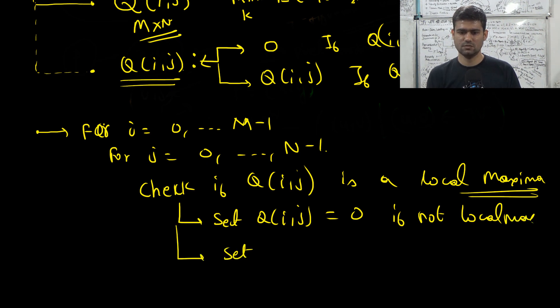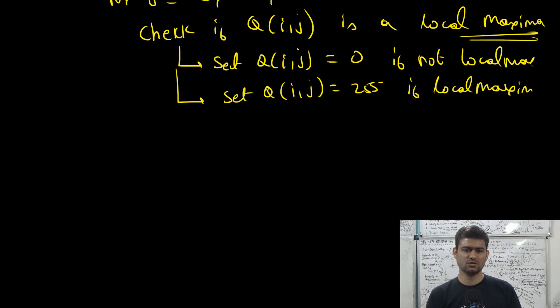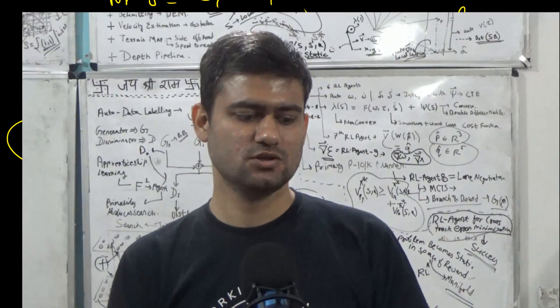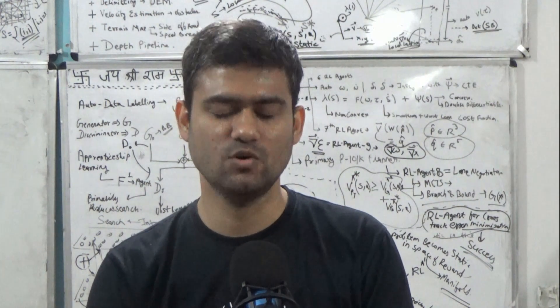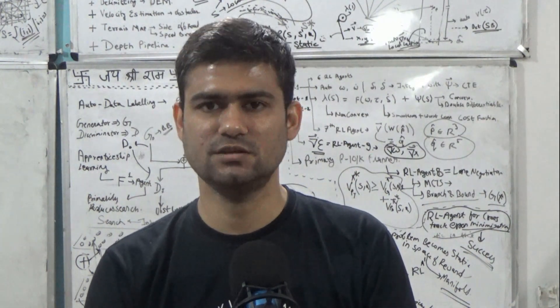Set Q_ij to 0 if not local maxima. Set to highest value, we can just binarize the image, 255 if it is local maxima. So finally we return the image Q and all the locations in Q that are 255 are corners in the image. So this is the entire Moravec corner detection algorithm.